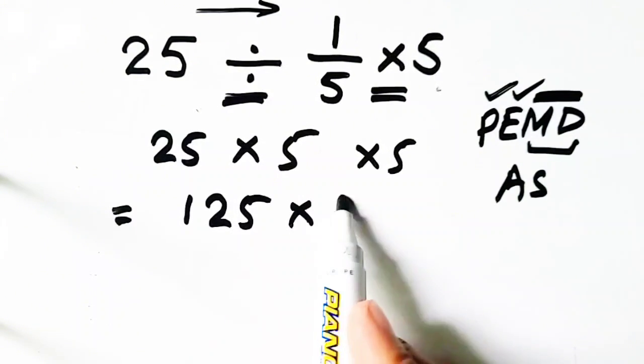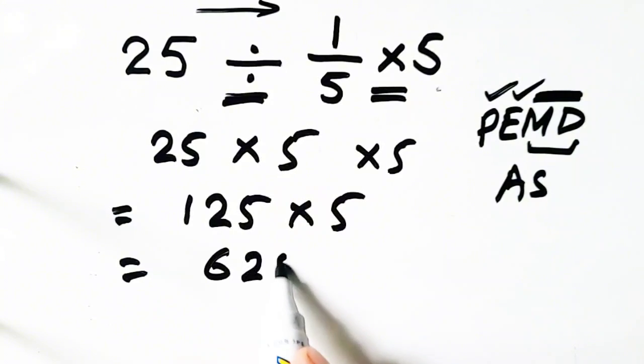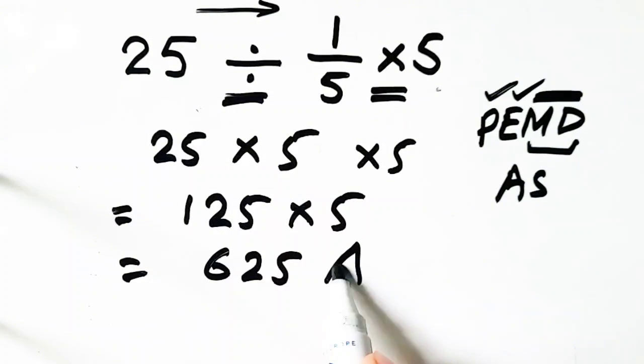125. We cross out 5 times 5, so when we multiply 125 times 5, we will get 625, which will be our answer. Thank you for watching.